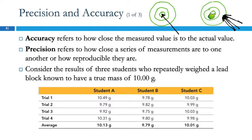Ideally, we would like to be able to hit the bullseye every time. Not always possible. So this is data from three different students who measured the same block of lead. And we know that the true mass of it is 10.00 grams. These are the values that they came up with.